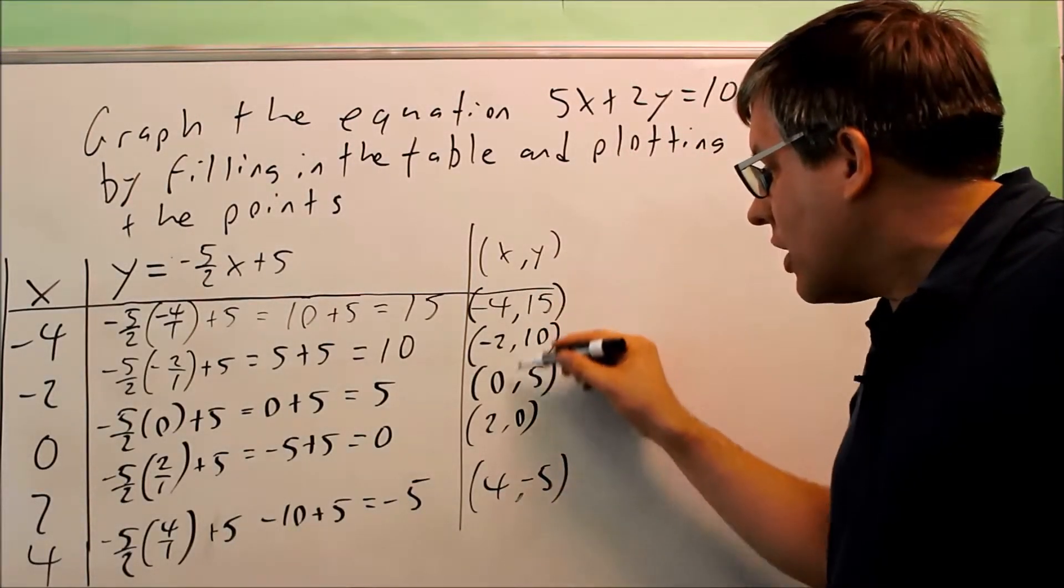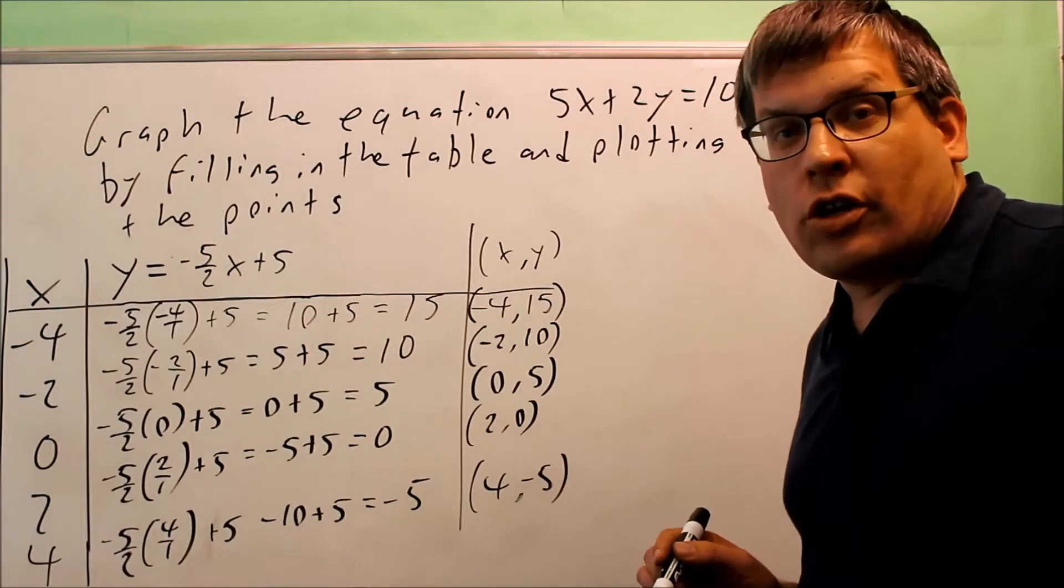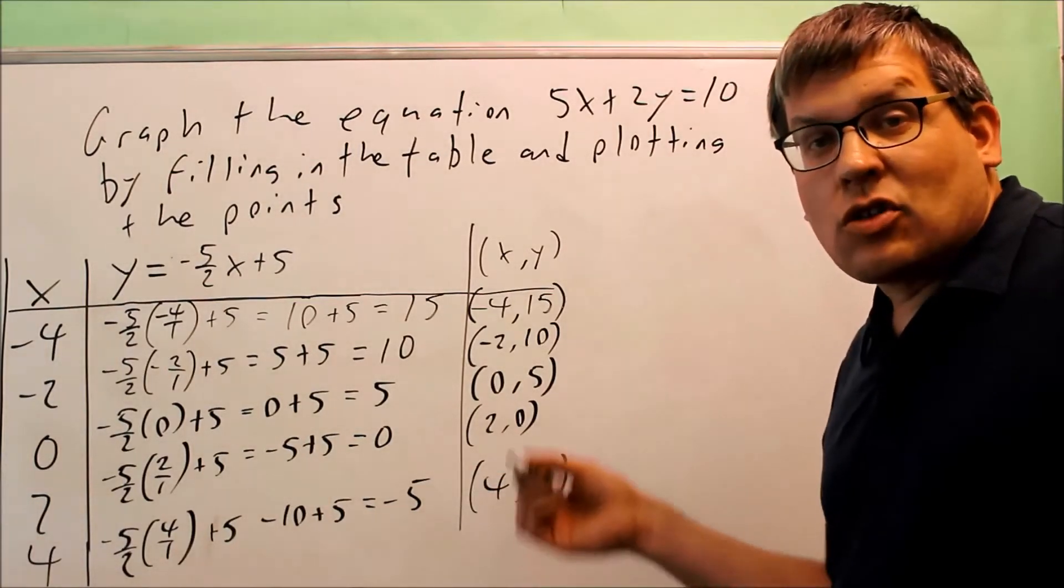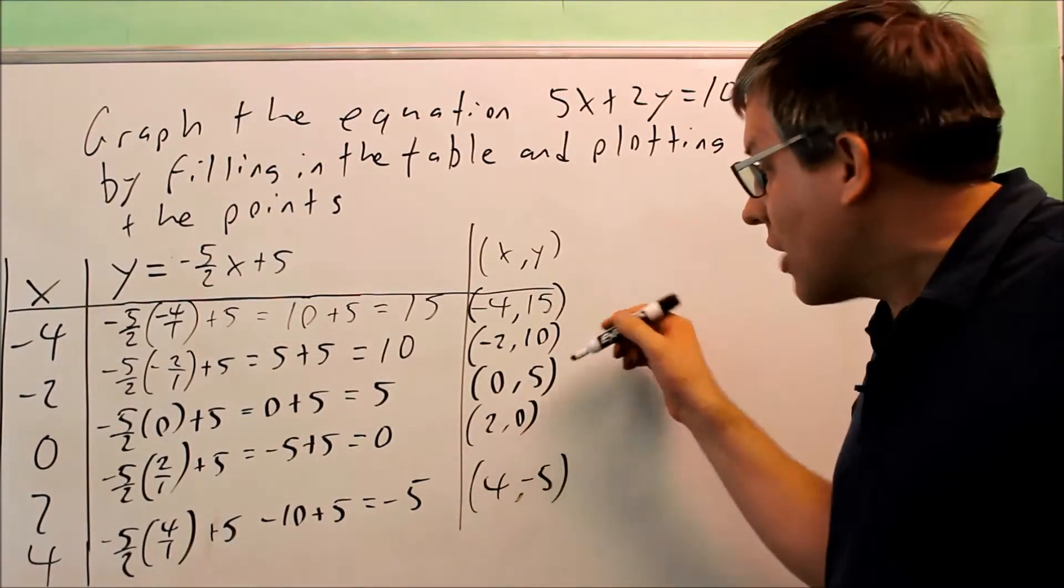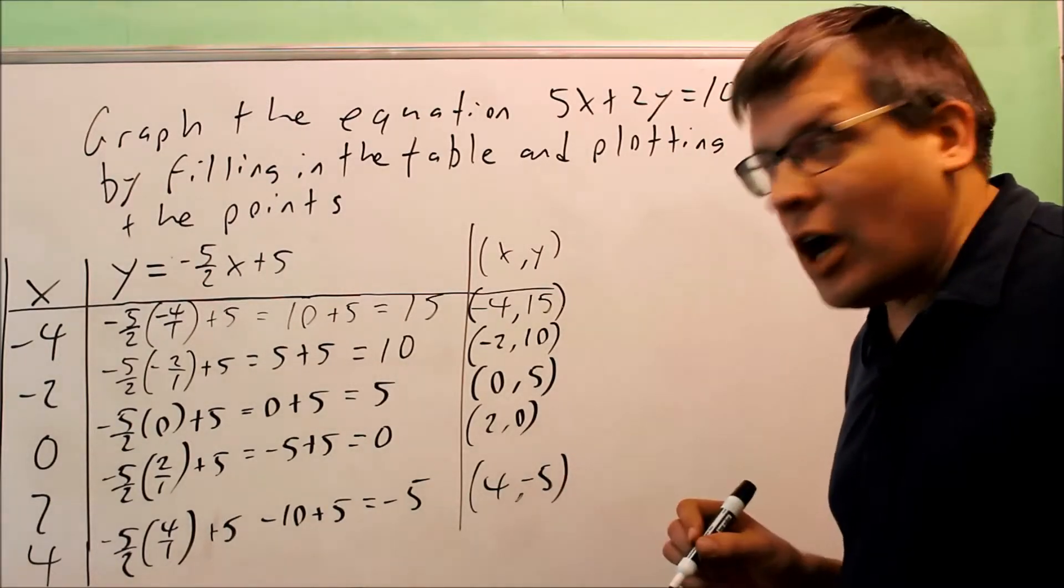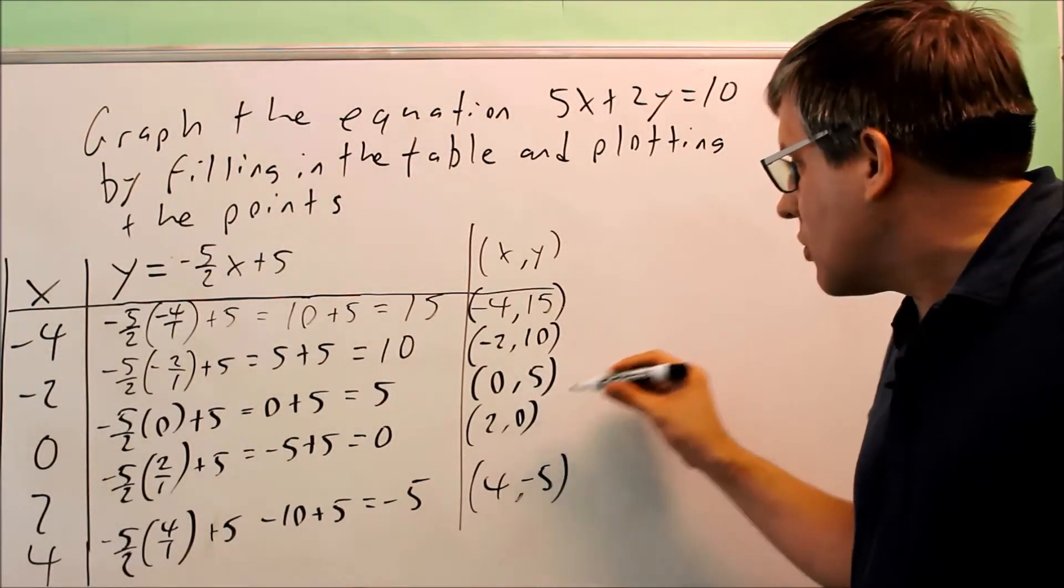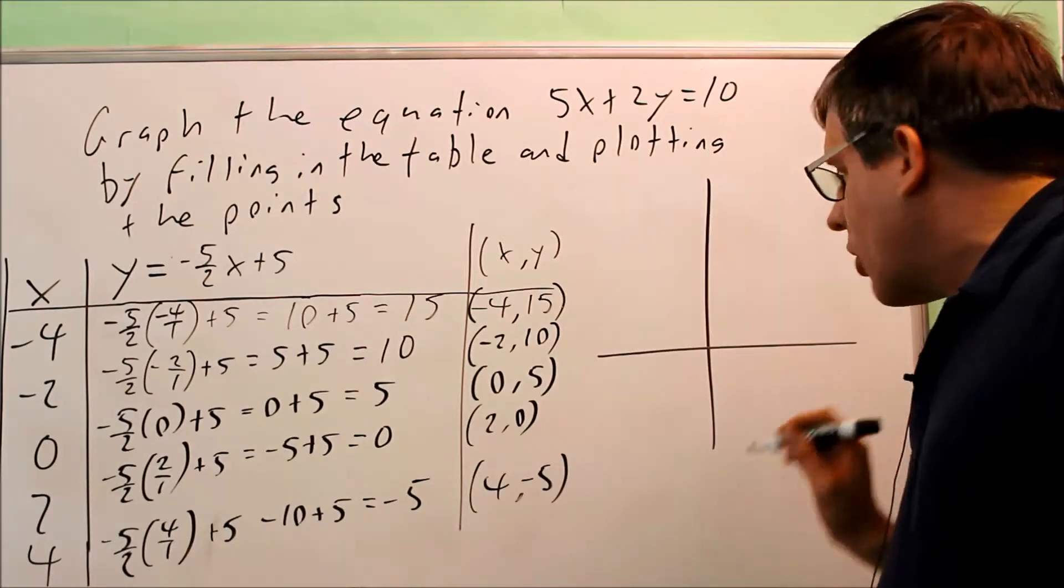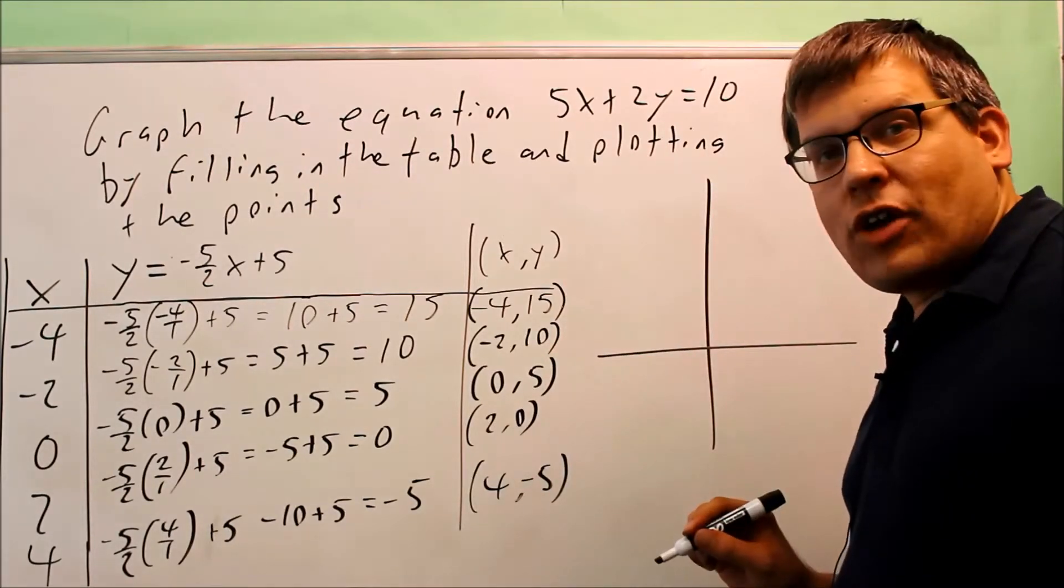So now all these are the points that you can plot in order to get a line. Now a line is determined only by two points. So you actually only have to pick two of these points only to draw to get the graph. So I'm going to pick these two because they're going to be easier for us to work with. So I have a 0, 5.